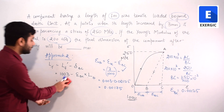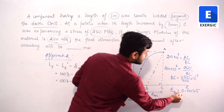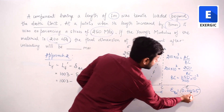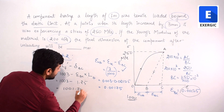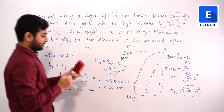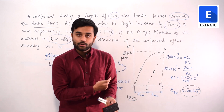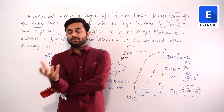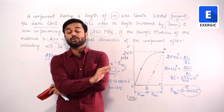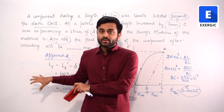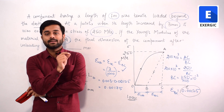Both approaches give the same answer of 1001.75 mm. It's also possible that a graphical question may ask you which expression can or cannot be used. I've explained everything needed to find the final dimension in a case where elastic recovery is happening.